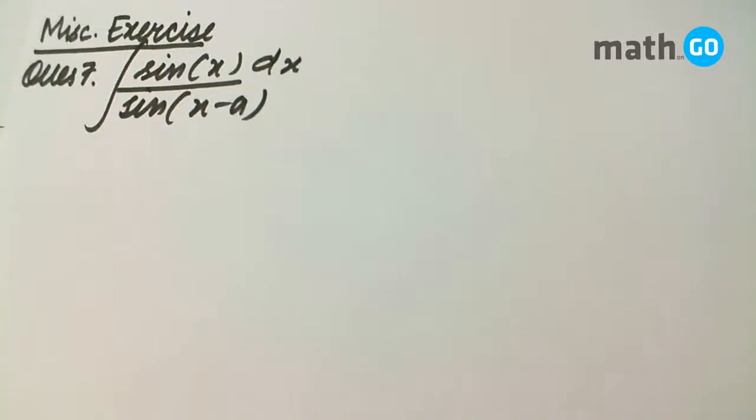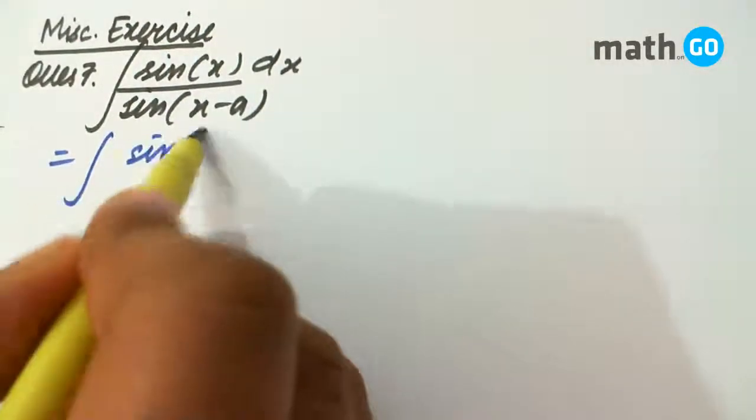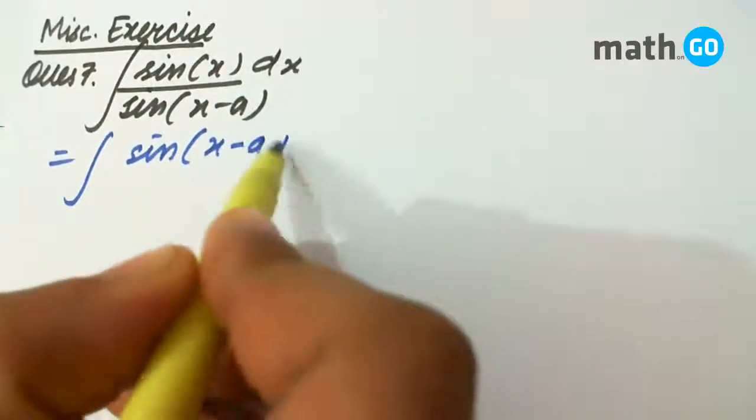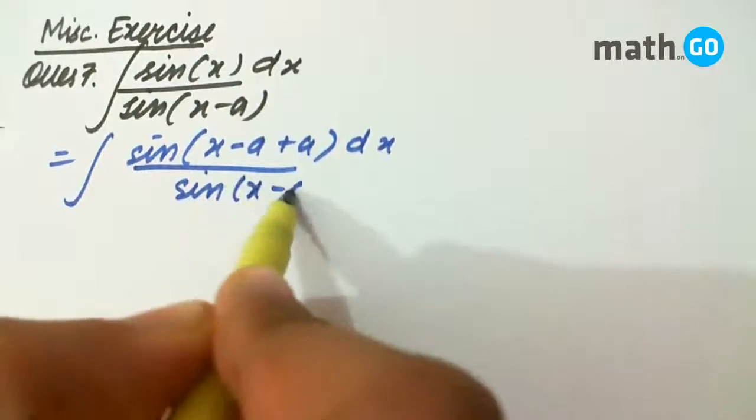Miscellaneous exercise question number 7. This question is an easy one and we have put it in the first time. What do we do? We need to integrate sin(x) dx divided by tan(x-a), which we rewrite as integral of sin(x-a+a) dx divided by sin(x-a).